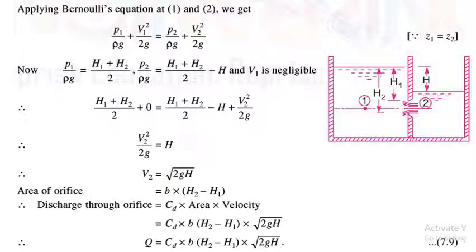The area of the orifice is B·(h2 − h1). Therefore discharge Q = CD·B·(h2 − h1)·√(2gH).